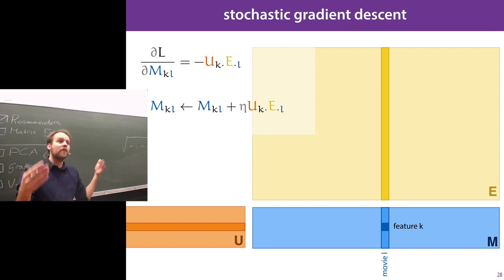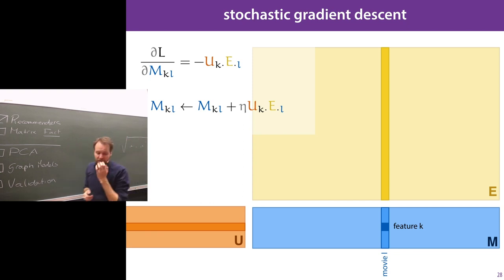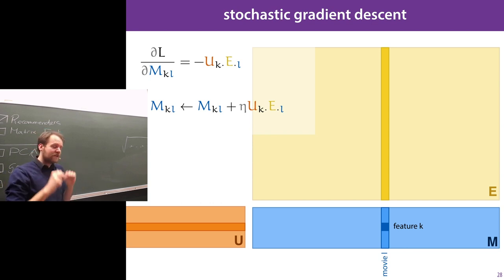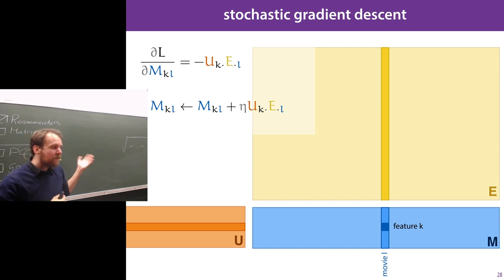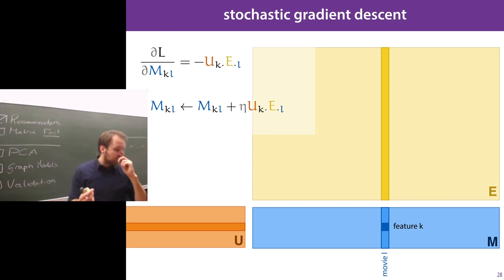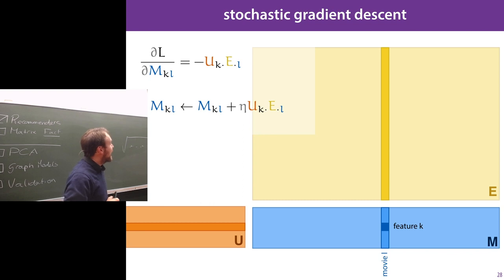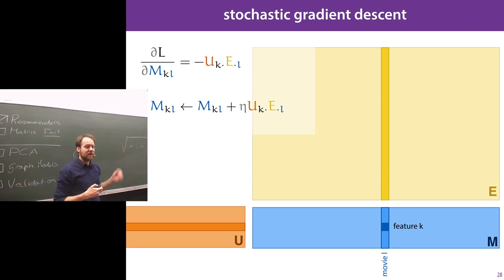And of course if you do the same thing for the movies, everything flips around — to update feature k for movie i we take these two vectors and take their dot product and add that to the feature. So that's the logic that this dot product prediction score function gives you, and then you can just train this by gradient descent. This is in many ways preferable to alternating least squares because it's more flexible, easier to add stuff to your model, and it tends to scale better. So most recommender systems these days use stochastic gradient descent.